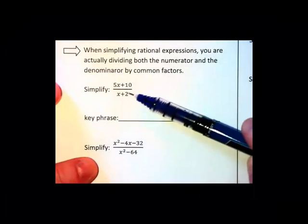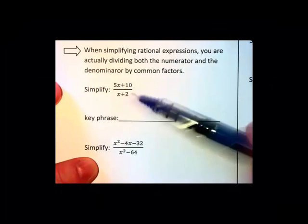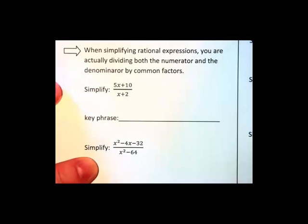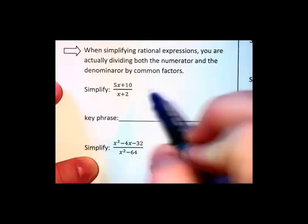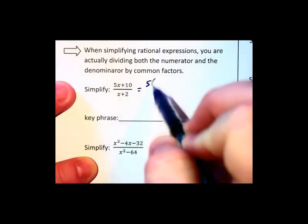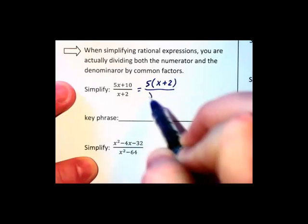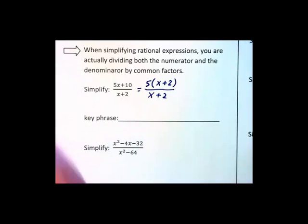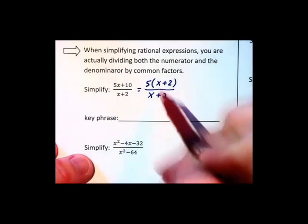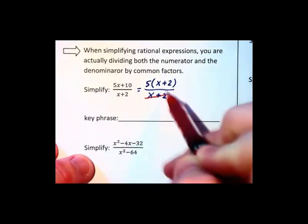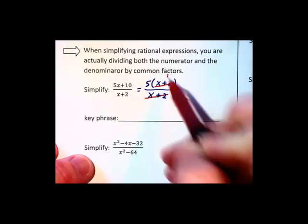On a problem like this, you cannot cancel the 10 and the 2. You cannot cancel the x's because you're not canceling factors. Instead, you should factor a 5 out of the numerator to give us x+2. And then it's the x+2, not just the x with the x and the 2 with the 2. It's the whole x+2 with the x+2 that's canceling.